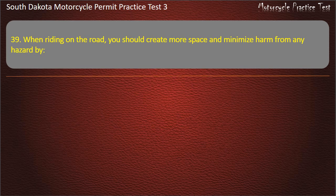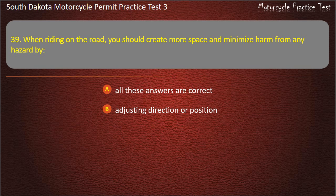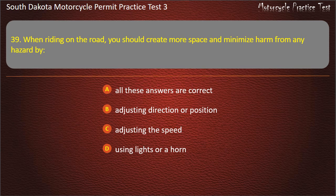Question 39: When riding on the road, you should create more space and minimize harm from any hazard by: All these answers are correct; Adjusting direction or position; Adjusting the speed; Using lights or a horn. Answer: All these answers are correct.